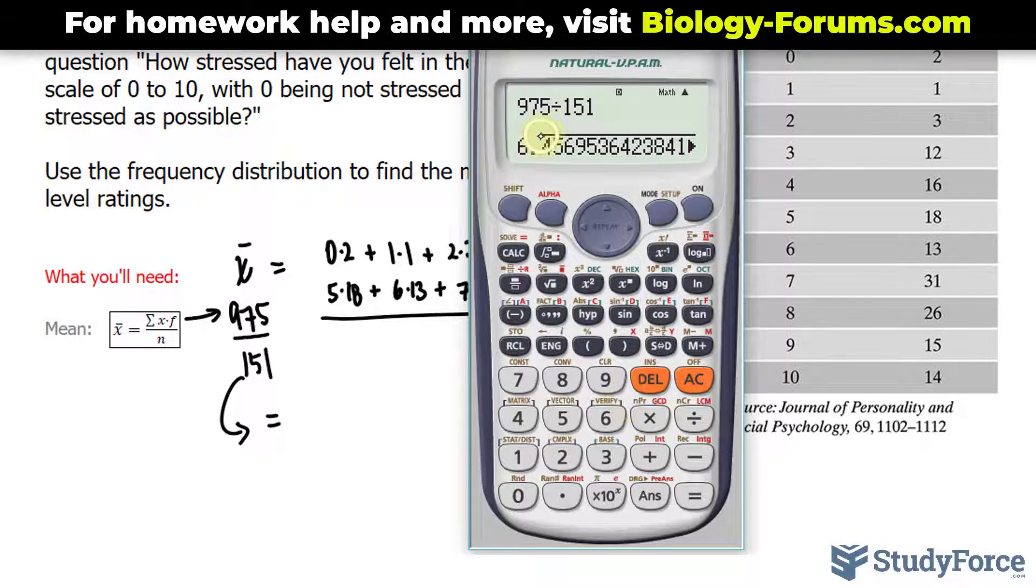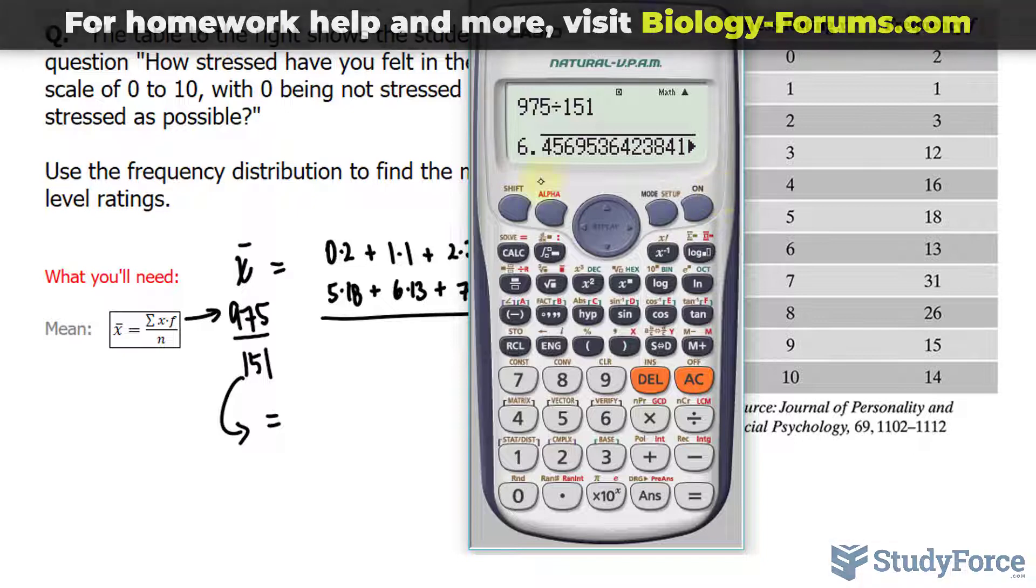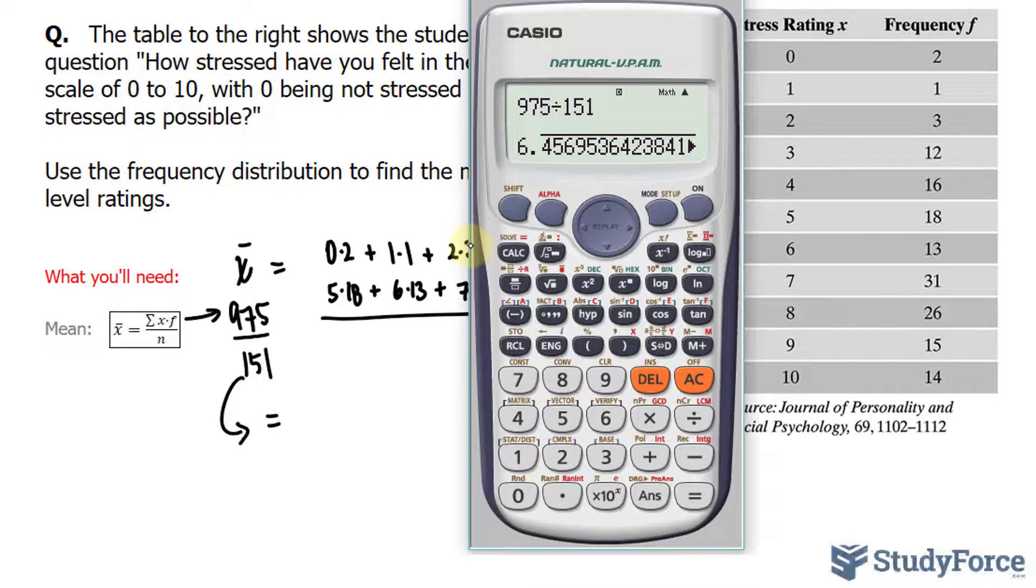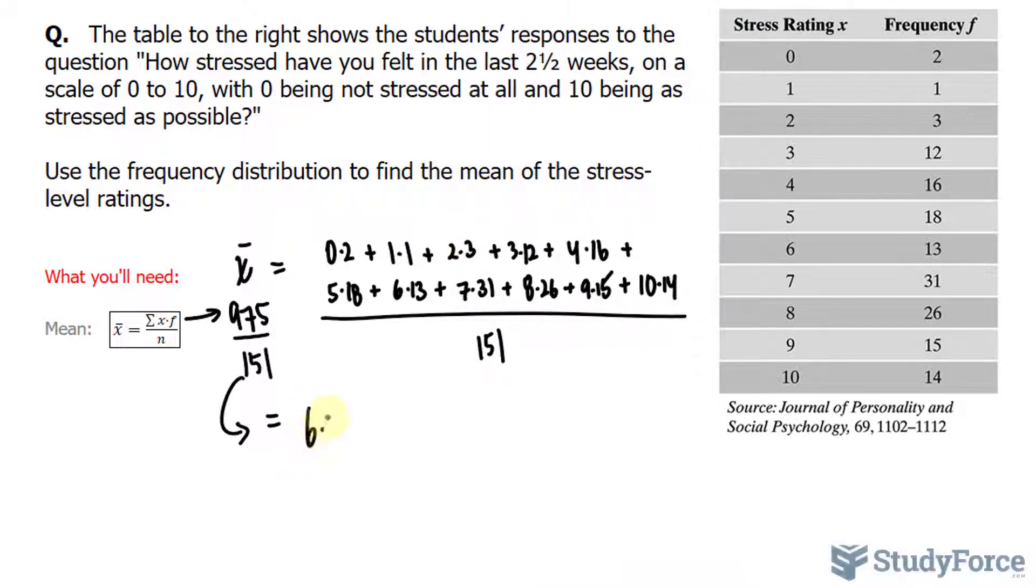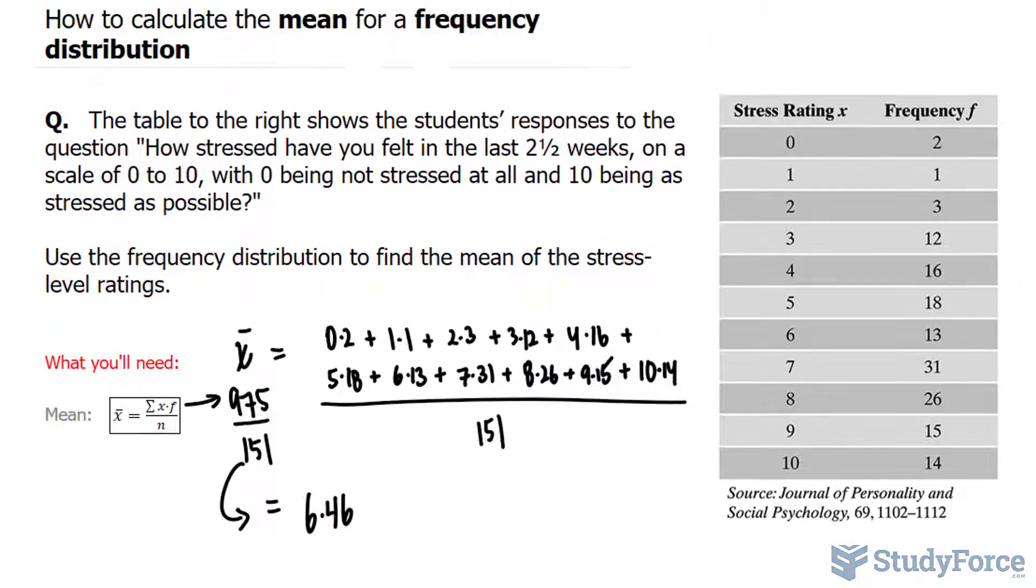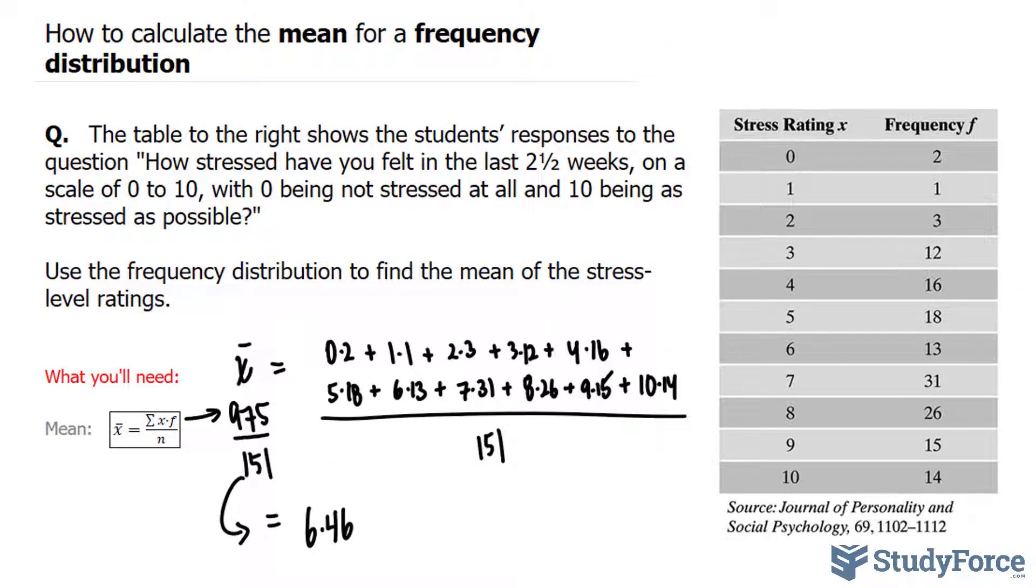Notice that we have this long line, which means it's repeating. So we'll round it to 6.46. And there you have it—that's how to calculate the mean for a frequency distribution.